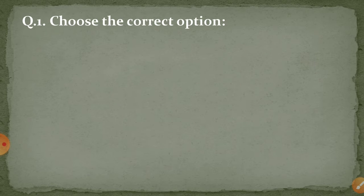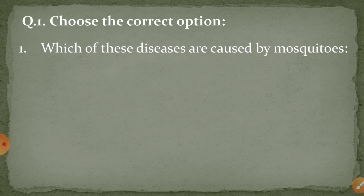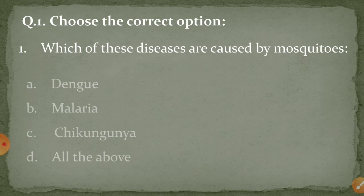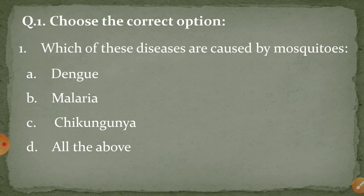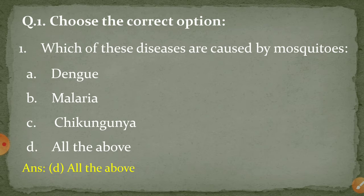First question: choose the correct option. Which of these diseases are caused by mosquitoes? Yaani mosquitoes se in mein se kaun si bimari hoti hai? Dengue, malaria, chikungunya, ya all the above yaani saari. The answer is all the above — yaani ki teeno bimariyaan jo hain woh mosquitoes se hoti hain.